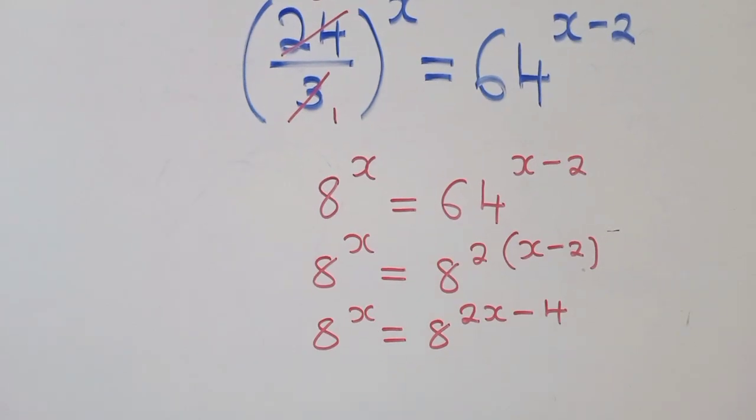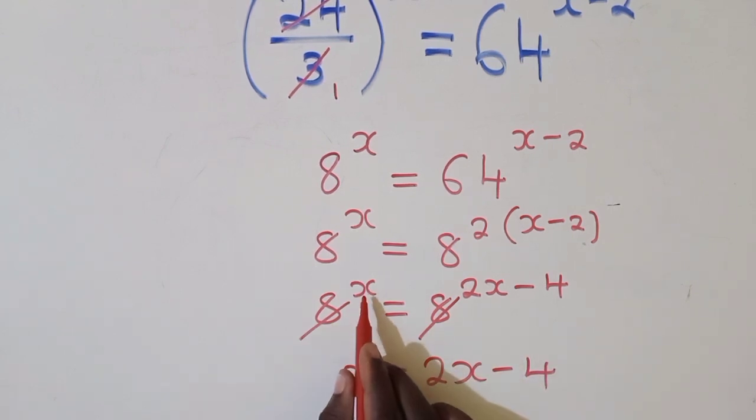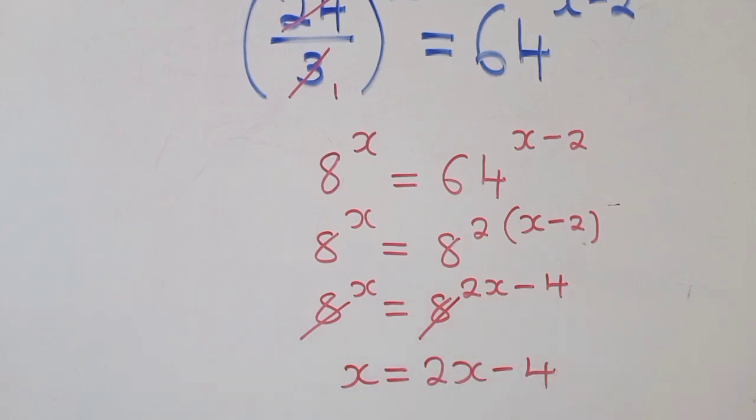If we balance the bases, yes, we have 8 here and also 8 here. That means x is equal to 2x minus 4. Upon balancing the bases, you get the powers. This power is equal to this other power.